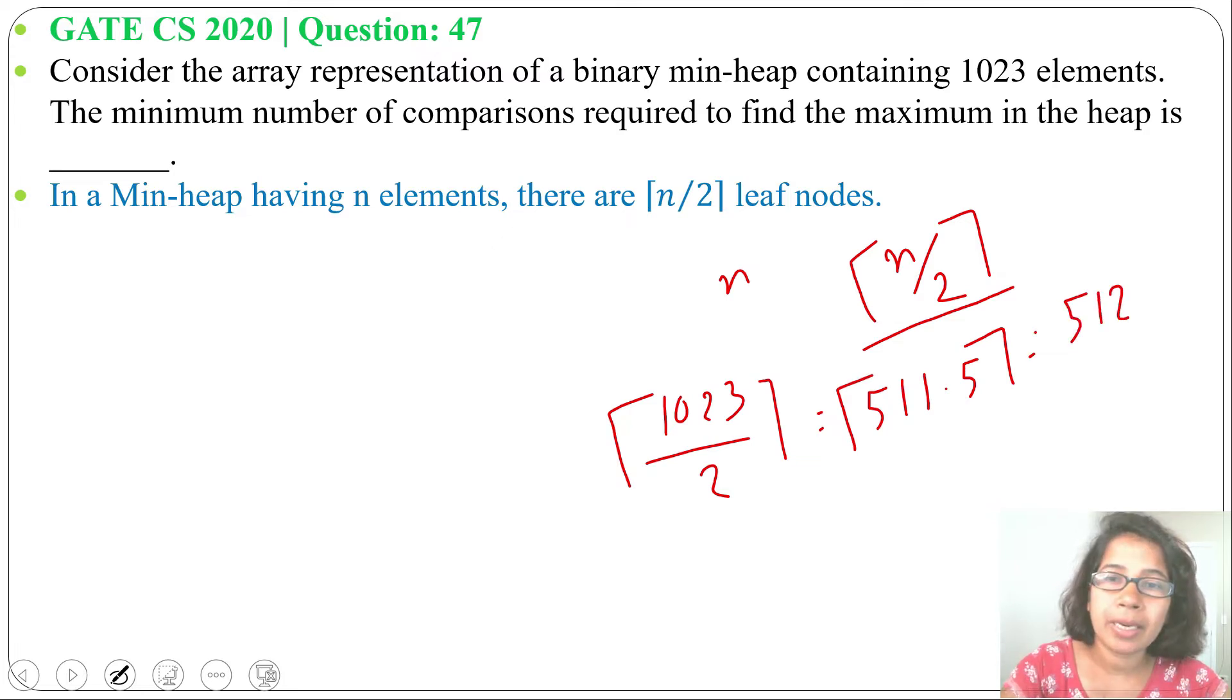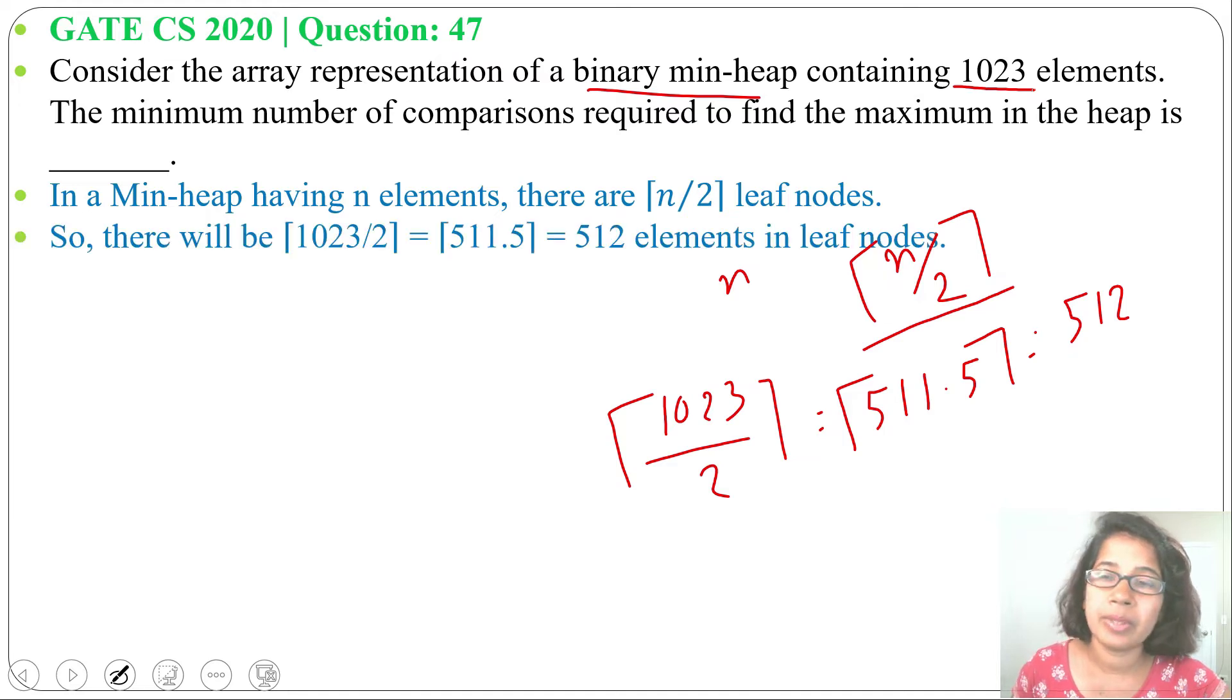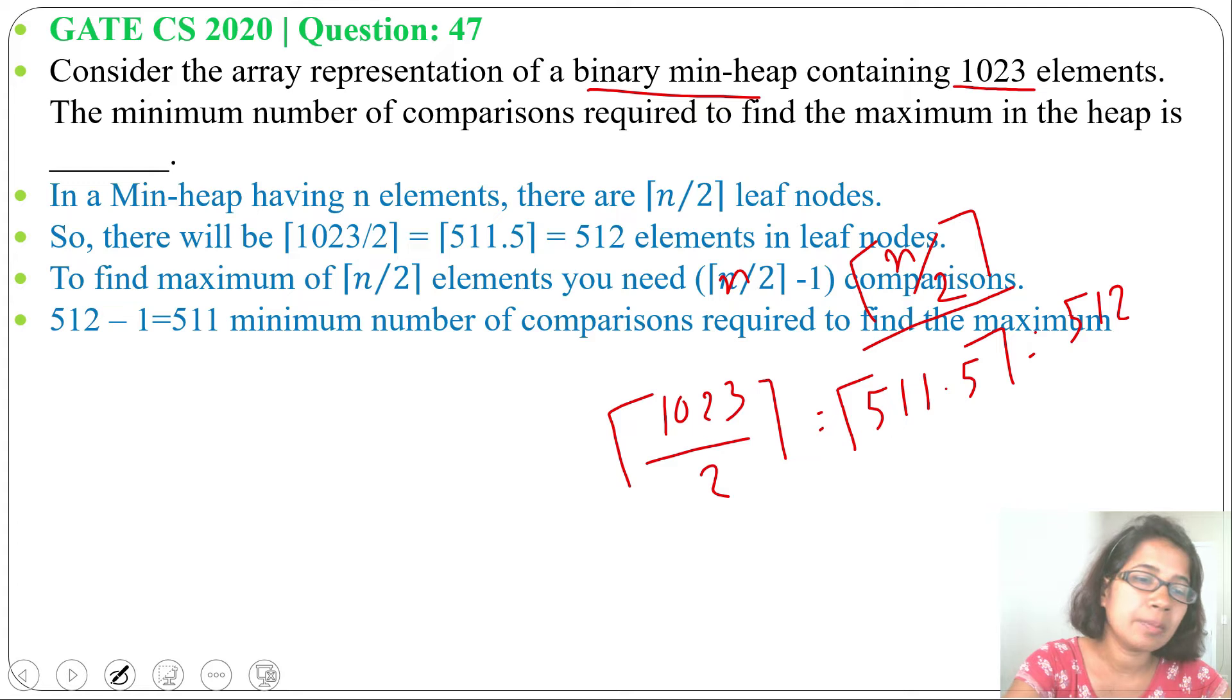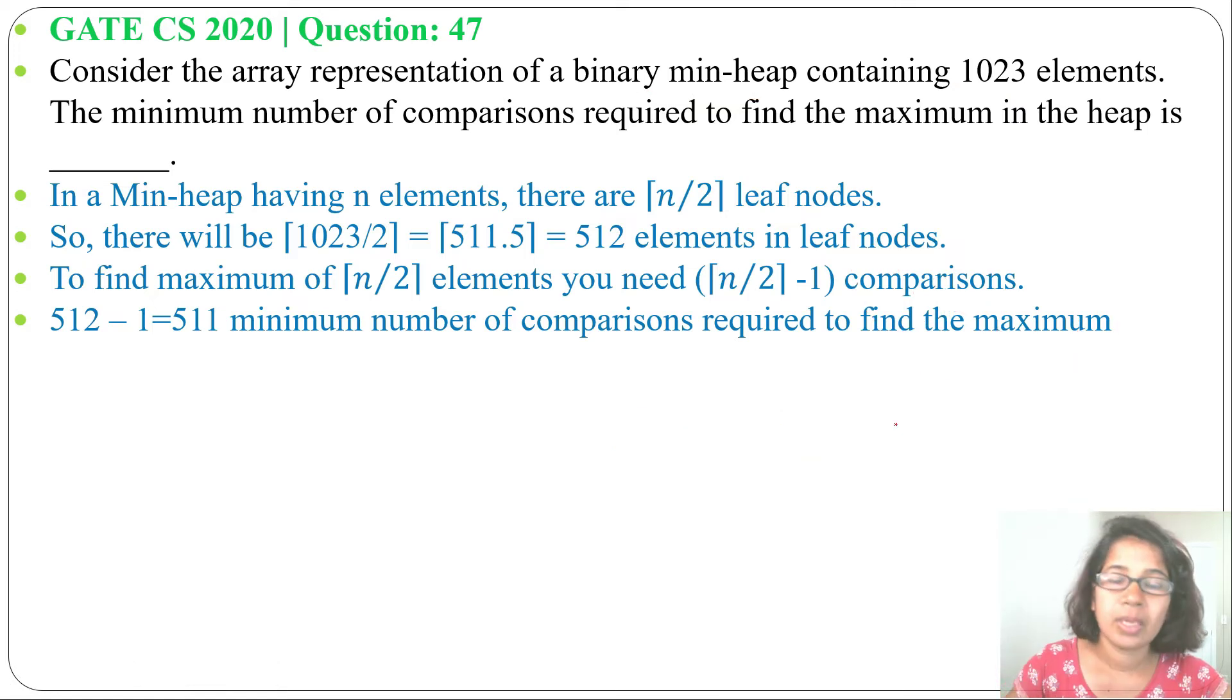So, in a binary min-heap containing 1023 elements, there will be 512 leaf. Now, in that 512 leaf, to find the maximum element, it will be 512 minus 1 means 511 minimum comparisons are required to find maximum element in 512 elements.